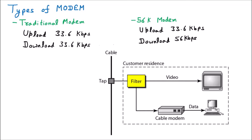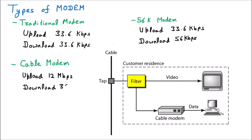We are discussing the next category of modem, called the cable modem. The name implies there is a cable coming to our home on which the modem works. Comparing the cable modem with the traditional modem and 56k modem, the speed is much faster. The upload speed of the cable modem is 12 Mbps, which is much higher than the traditional and 56k modems that operate in kilobits. The downloading speed is even faster at 36 Mbps.